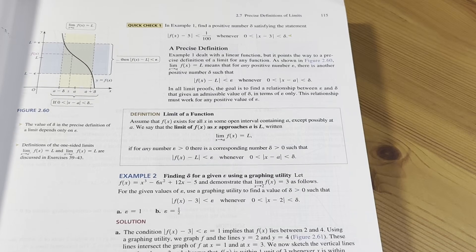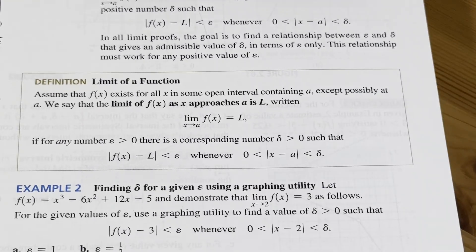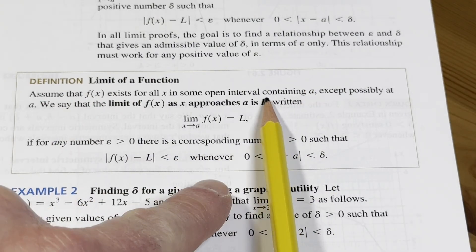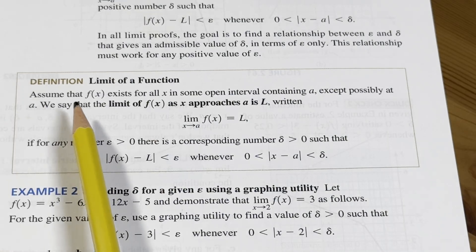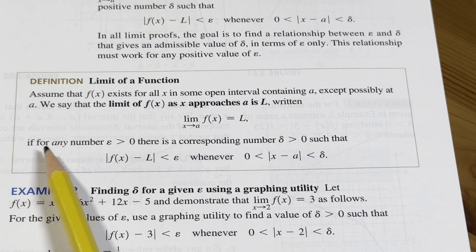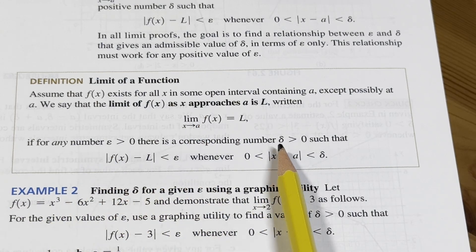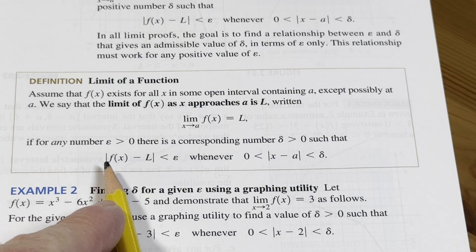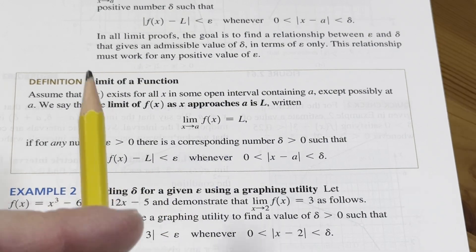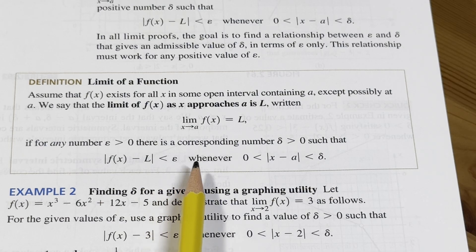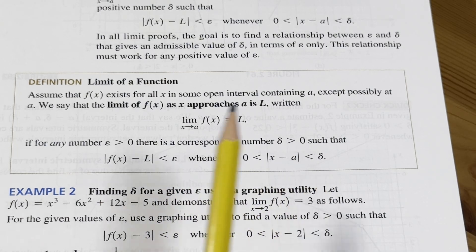Oh, here's a beautiful thing in calculus. Right here. Check this out. This is cool. The limit of a function. Let's read this. Assume that f(x) exists for all x in some open interval containing a, except possibly at a. We say that the limit of f(x) as x approaches a is L, written that way. If for any number epsilon greater than zero, there is a corresponding number delta greater than zero, such that. And one way to read this is, okay, so you have the absolute value of f(x) minus L less than epsilon. So you can think of this as the distance between f(x) and L. So the distance between f(x) and L is less than epsilon whenever the distance between x and a is less than delta.